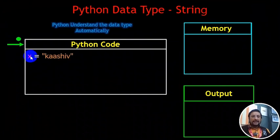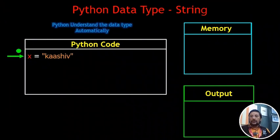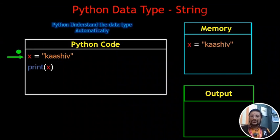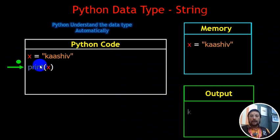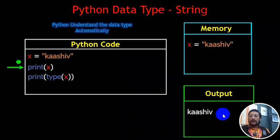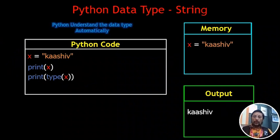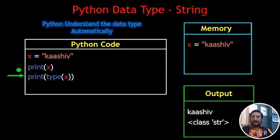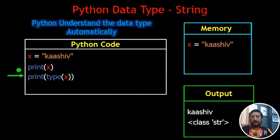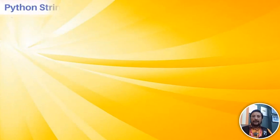The string is called X, and X is equal to 'Kashiw'. This is called Python's string declaration. If you use X with 'Kashiw', it will be a string automatically — that is Python's beauty. There are many string methods in Python.